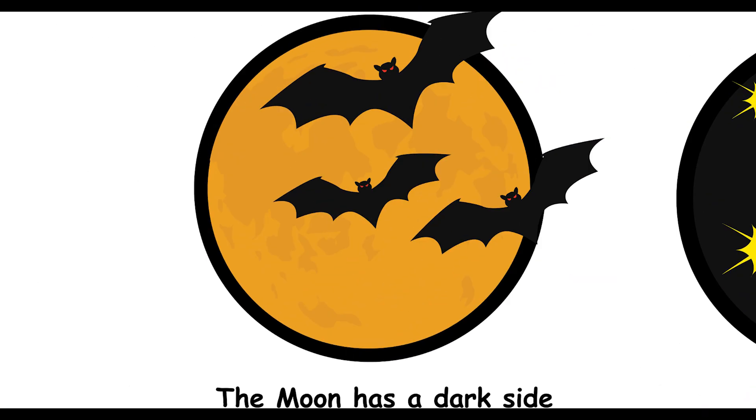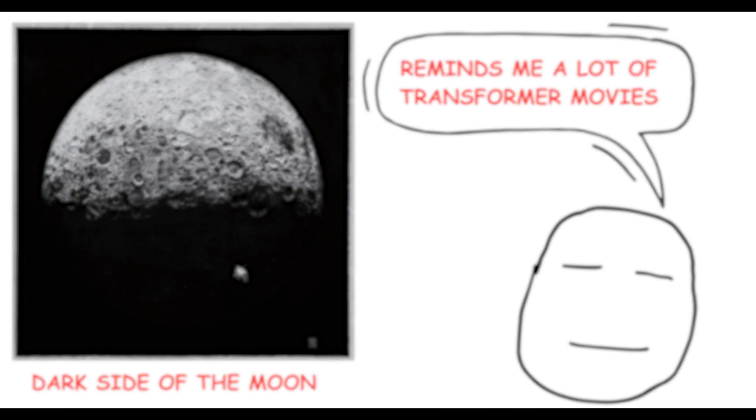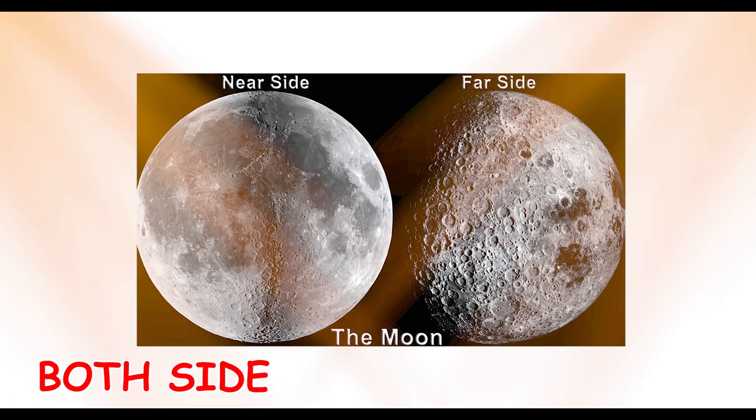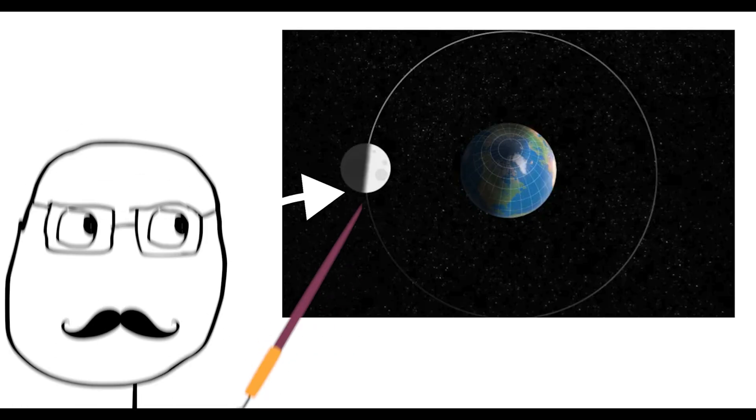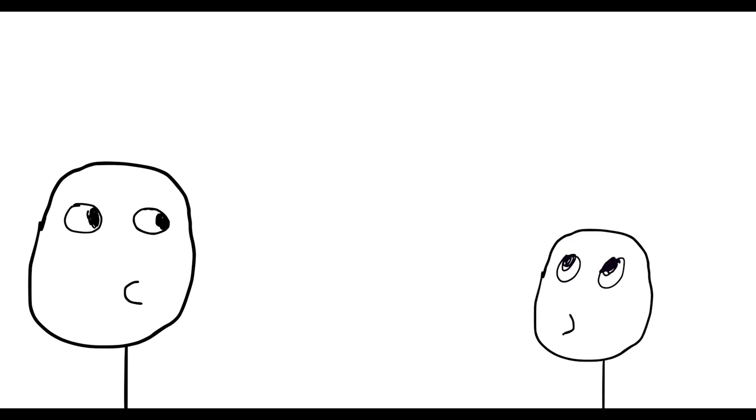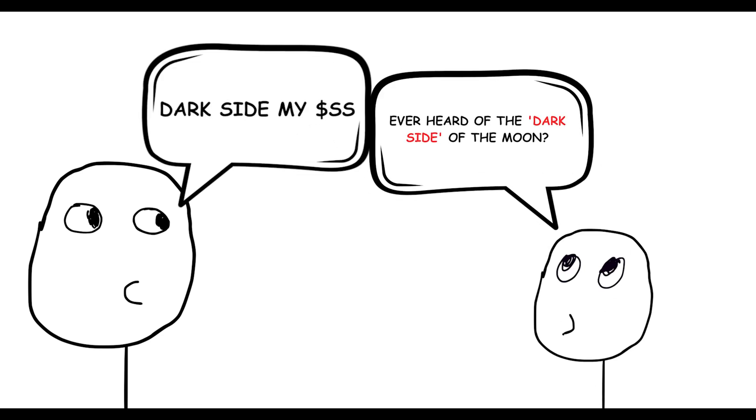The moon has a dark side. Ever heard of the dark side of the moon? Sounds mysterious, but it's not true. The moon has a far side, not a dark side. Both sides receive sunlight, it's just that one side always faces Earth due to tidal locking. So the next time someone mentions the dark side of the moon, you'll know the real story.